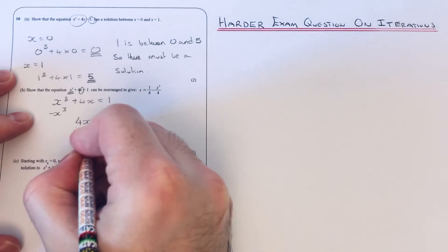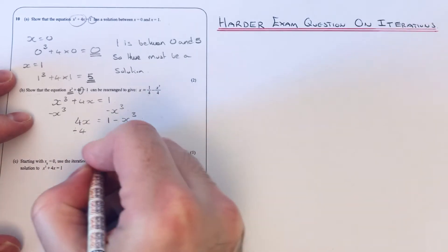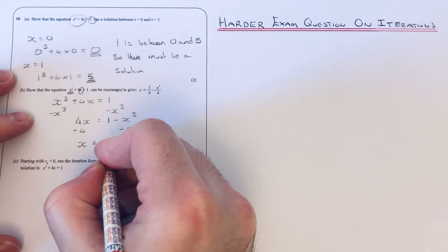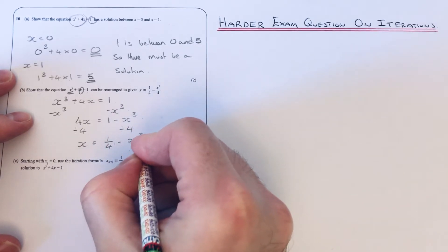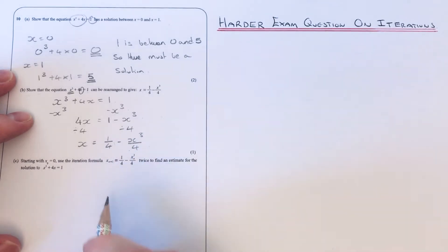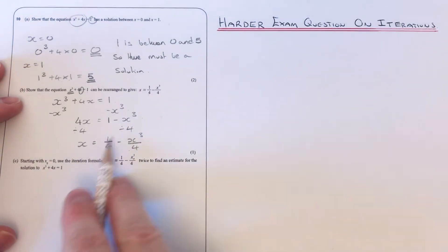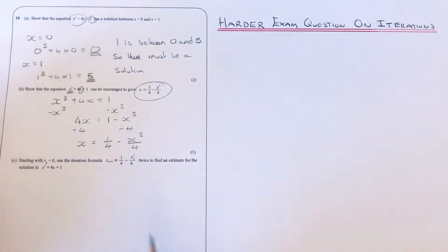And then x is being multiplied by 4, so if we divide both sides by 4, we get x = ¼ - x³/4. So we've made x the subject and it is exactly the same as that up there.